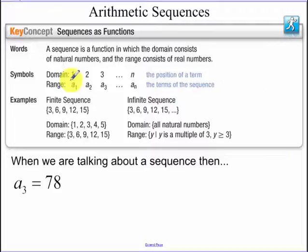Meaning, our domain is basically the term number. Our range is the value of the term number, so a sub 1, a sub 2, a sub 3. That's going to be the value of the term. The subscript here tells us the term number, or the number in our domain.